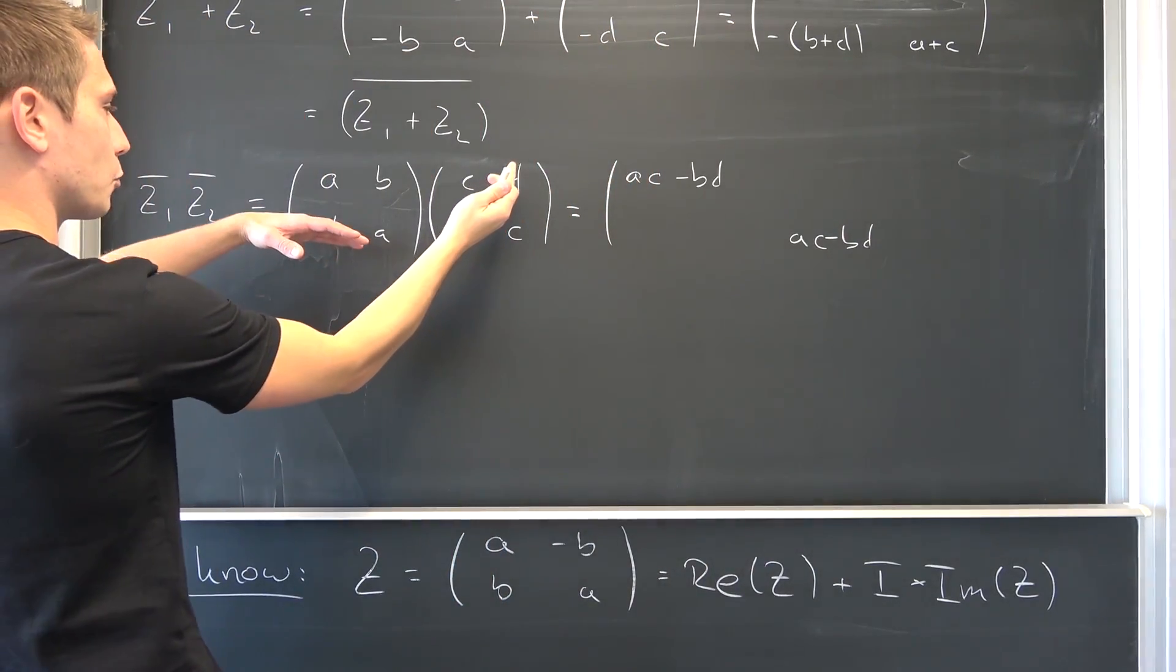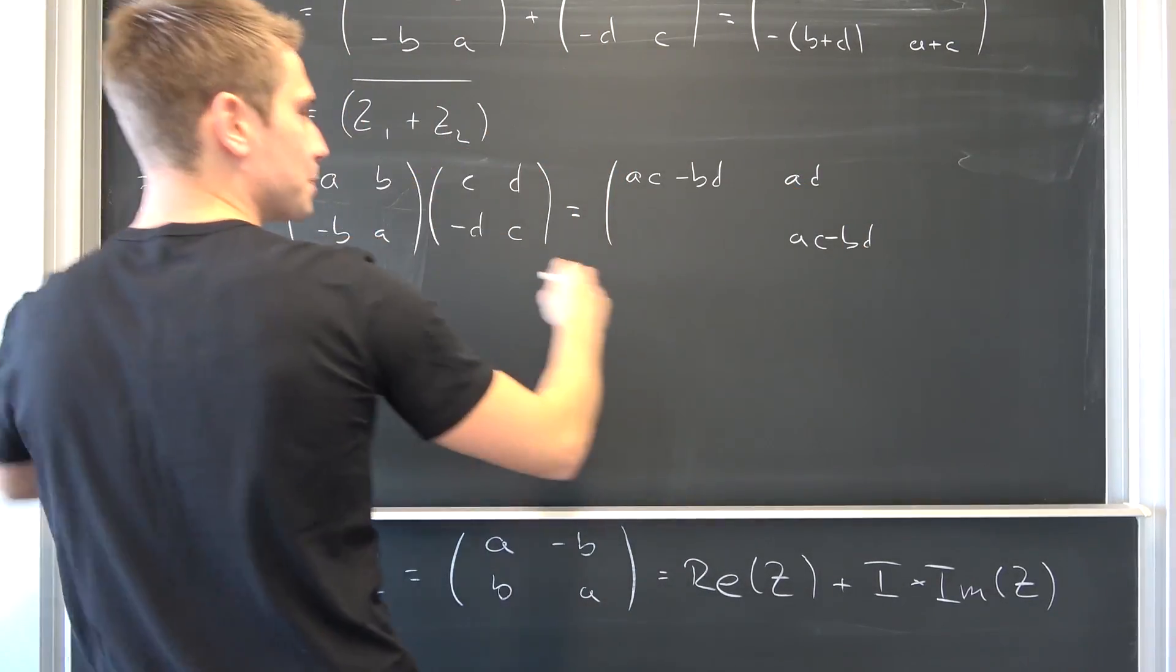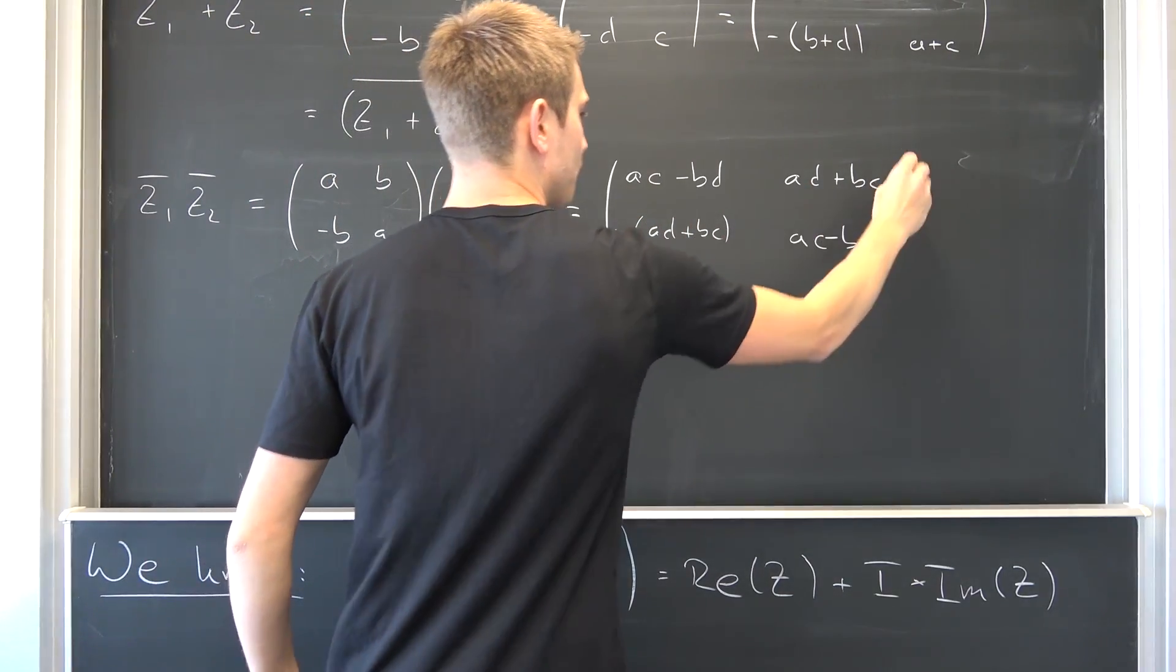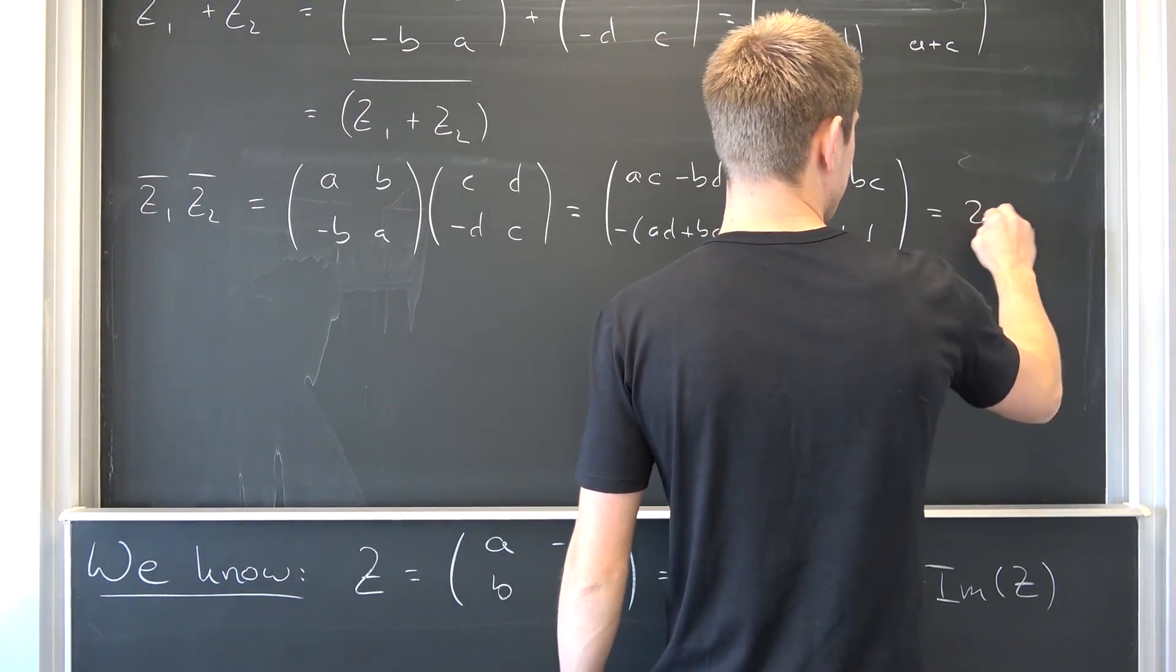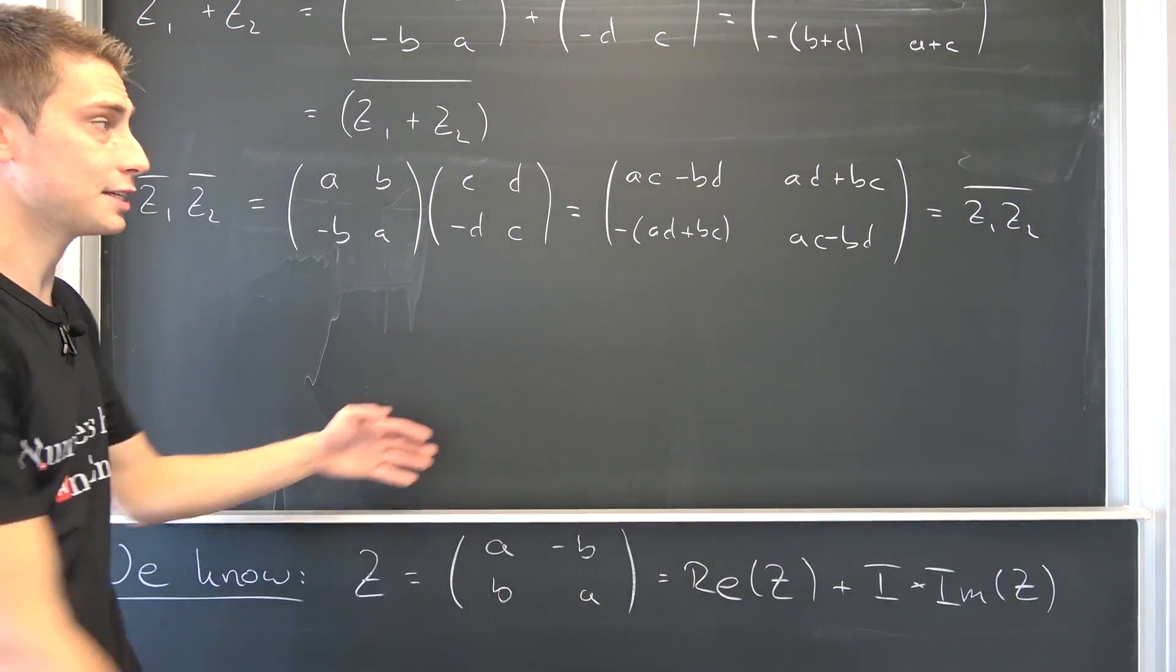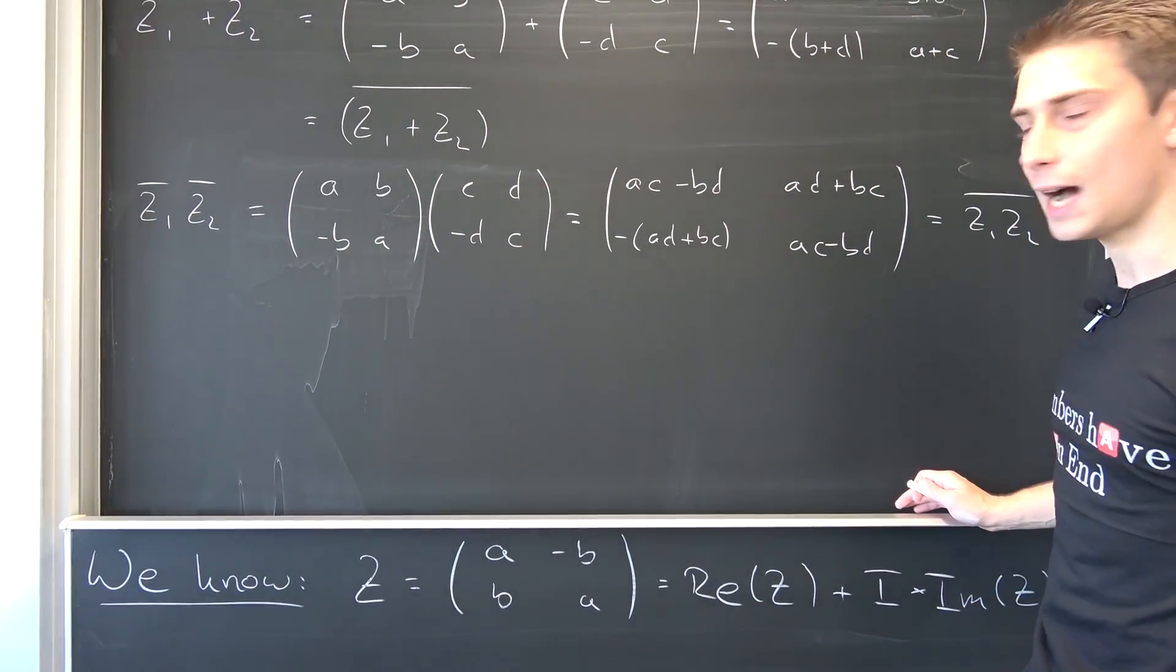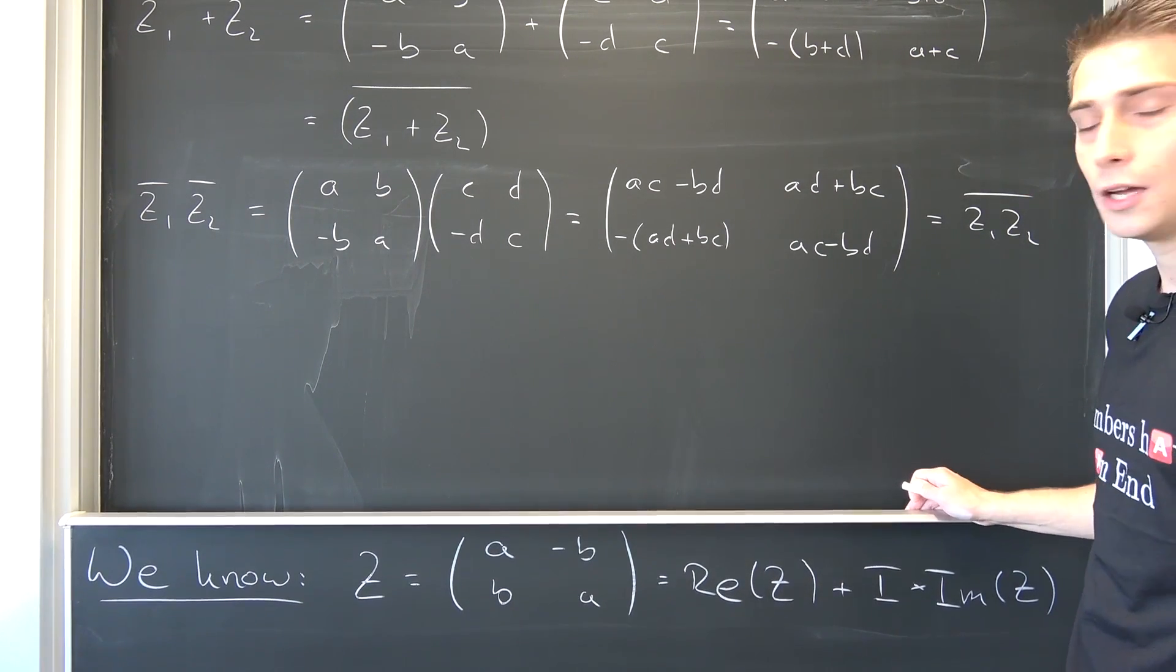And after that everything negative, negative ad plus bc. And yet again if you think back to the last video, this is going to be exactly z1 times z2 but the complex conjugate of this whole thing, a transpose of this thing yet again. Meaning it's also being preserved under multiplication and thus under division.